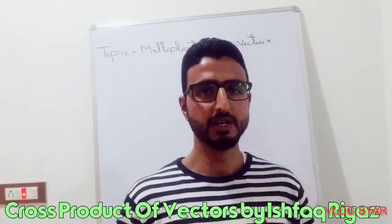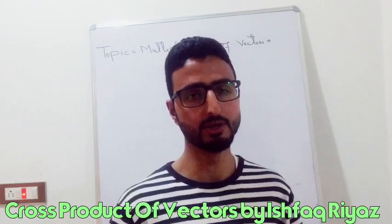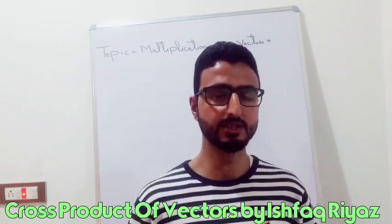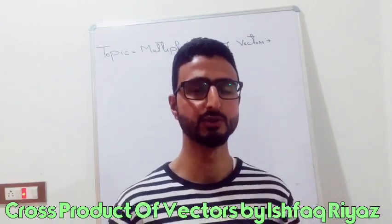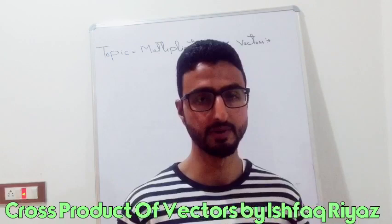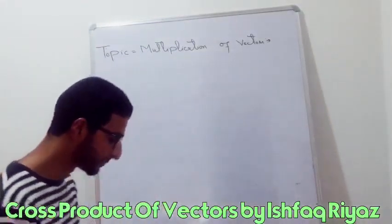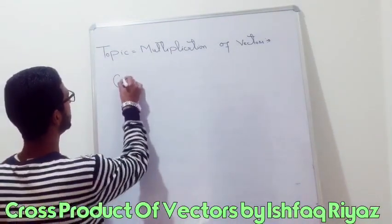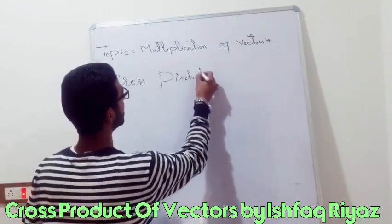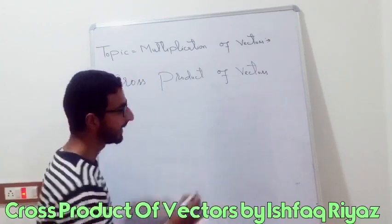As-salamu alaykum dear students, I am Shafak Riyaz Dar and today we have an interesting topic of physics: multiplication of vectors. You already know from the definition of vectors they possess both magnitude as well as direction, so they don't follow the ordinary laws of algebra. To multiply them we use two special operations: the dot product and the cross product of vectors. Today we will discuss the cross product of vectors.